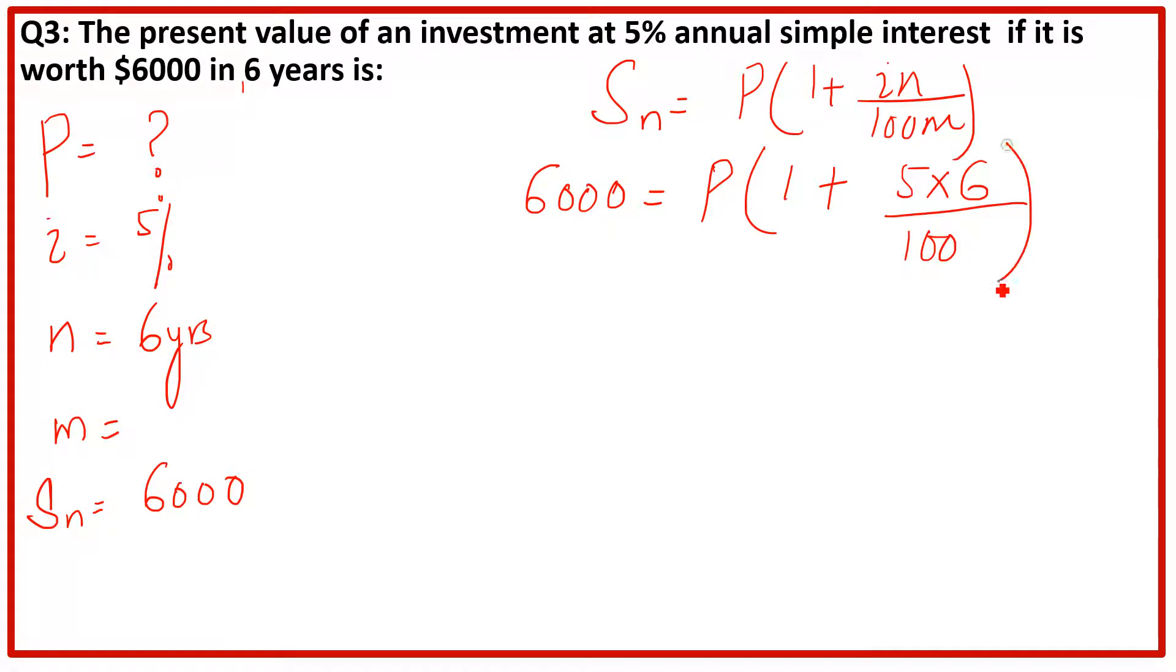Okay, now 6000. I will show you the simplest way to solve it, otherwise you can take the LCM as well. 5 times 30 divided by 100, which is equal to P times 1 plus 0.3. 30 divided by 100 which is equal to 0.3, and this 6000 will remain the same here. 6000 equals P times 1.3.